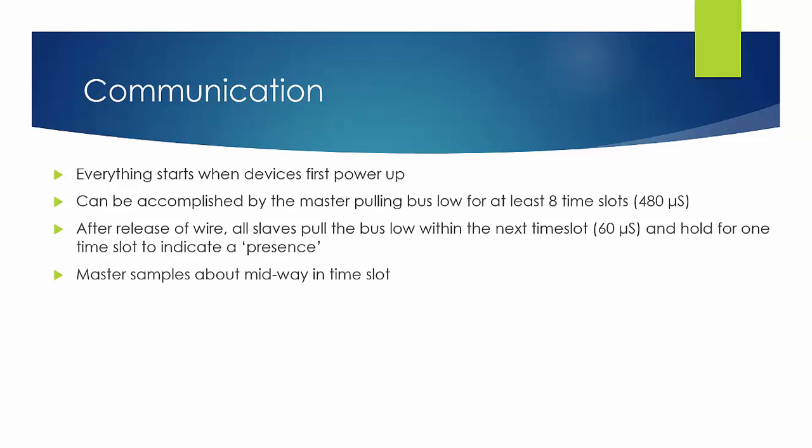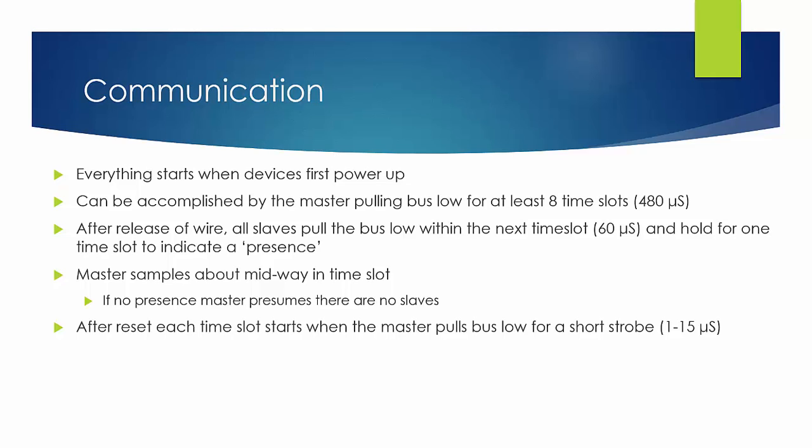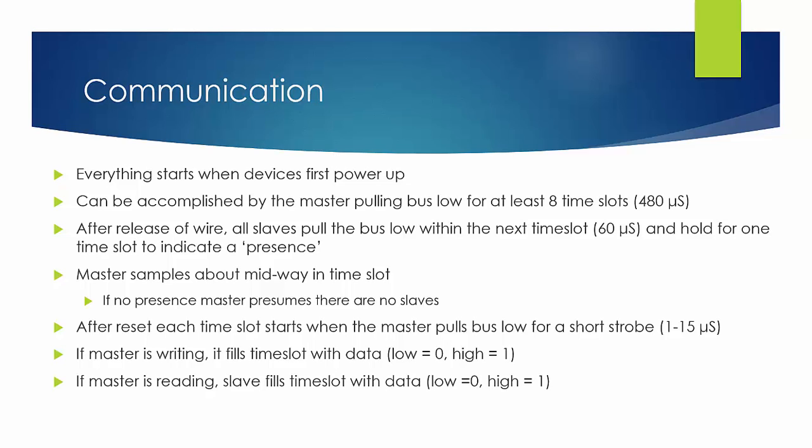And the master samples about midway or 30 microseconds into that time slot. If there's no presence signal, then the master presumes there are no slaves and it aborts any further communication. After each reset, all time slots start when the master pulls the bus low for a very short strobe, 1 to 15 microseconds. After that strobe, which is the clock strobe, if the master is going to write, it fills the time slot with data. So it holds the bus low to indicate 0 and it lets the bus float high to indicate a 1. If the master is reading, then the slave fills that time slot with the data. And everyone samples midway through the time slot, or 30 microseconds, after the 0 to 1 transition of the strobe.